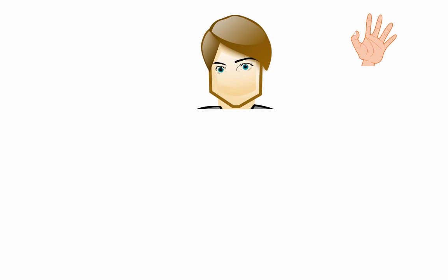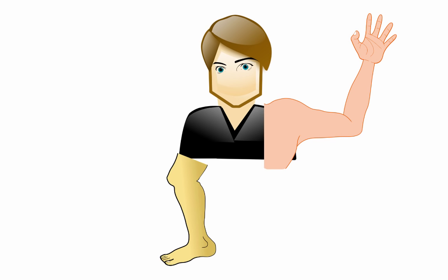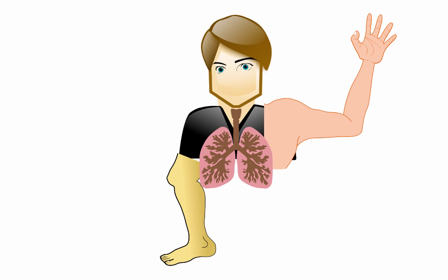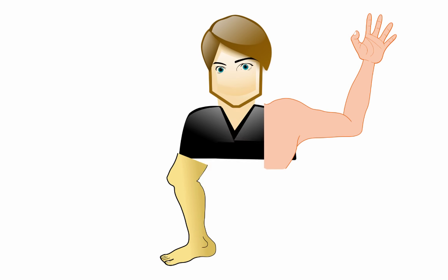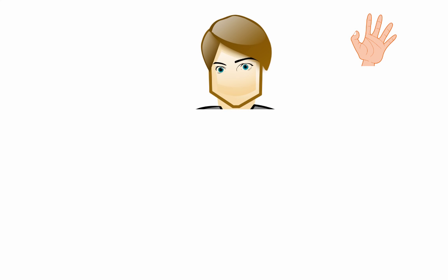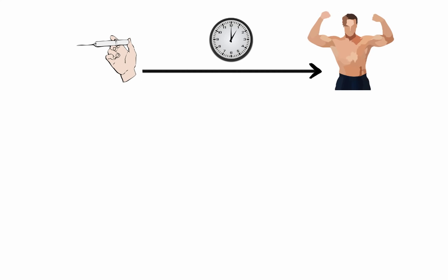Once administered, non-depolarizing agents paralyze small fast-contracting muscles first — eyes, face, fingers — then larger muscles of the neck, trunk, and limbs, and lastly the diaphragm. Recovery occurs in the reverse order: diaphragm first, then limbs, trunk, and so on. The choice of agent typically depends on the desired onset and duration of muscle relaxation. Clinical duration is defined as the time from administration to recovery of 25% of baseline muscle strength.